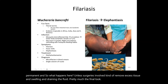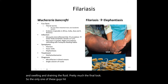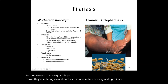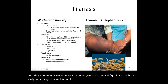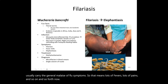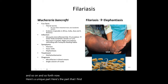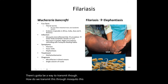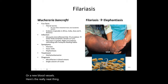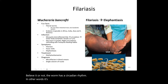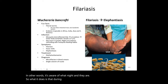When these worms enter your circulation, the immune system does try to fight them, so the infection typically carries general malaise and flu-like symptoms — lots of fevers and pain. Here's what's uniquely fascinating: there has to be a way for the worm to transmit back to the mosquito when it's hiding inside your lymph nodes or blood vessels.